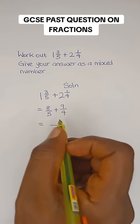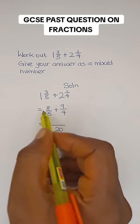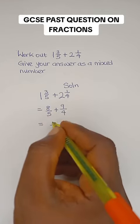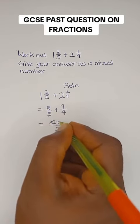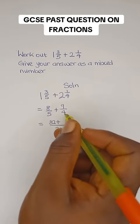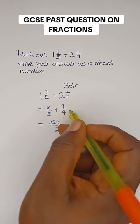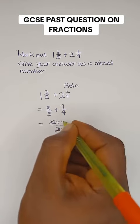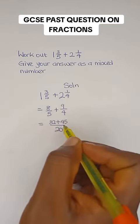20 divided by 5 is 4. 4 multiplied by 8 is 32. So we have 32. Plus, 20 divided by 4 is 5. 5 multiplied by 9 is 45. So we have 45 here.